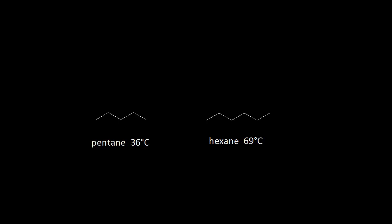Let's compare two molecules: pentane on the left and hexane on the right. These are both hydrocarbons, which means they contain only hydrogen and carbon. Pentane has five carbons. So five carbons for pentane, and pentane has a boiling point of 36 degrees Celsius.